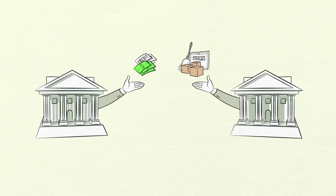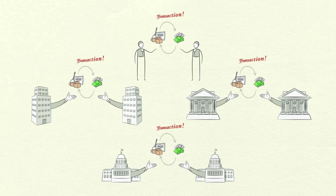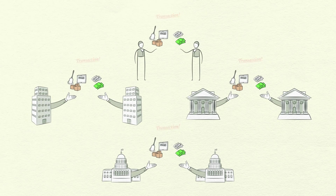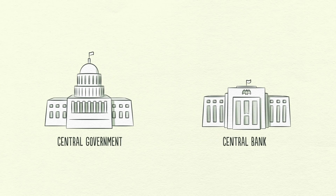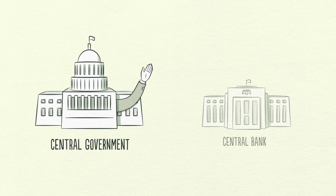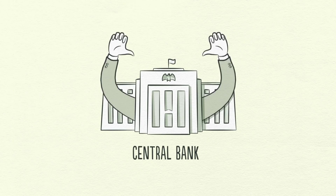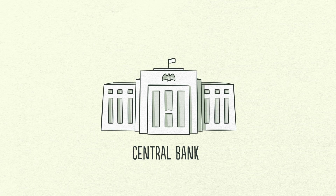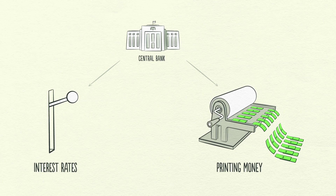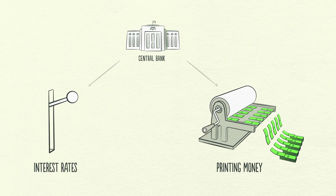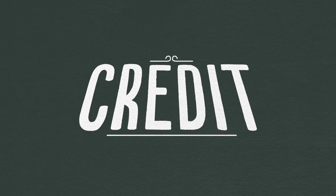People, businesses, banks, and governments all engage in transactions, exchanging money and credit for goods, services, and financial assets. The biggest buyer and seller is the government, which consists of two important parts: a central government that collects taxes and spends money, and a central bank, which is different from other buyers and sellers because it controls the amount of money and credit in the economy. It does this by influencing interest rates and printing new money. For these reasons, the central bank is an important player in the flow of credit.